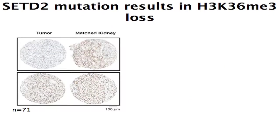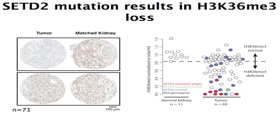We then turned to the tumors themselves, made a tissue microarray, and studied it specifically for H3K36 trimethylation status. Compared to matched kidney, where you see nice strong nuclear staining for H3K36, there were some tumors with similarly strong nuclear staining and many with a deficiency of nuclear staining, indicating K36 loss. We quantified that and saw that the normal samples clustered together, while tumors showed a fairly wide distribution. Those tumors with high-severity mutations had the greatest loss in H3K36, but we also identified others without a detectable mutation — some had low protein and others had no RNA expression.